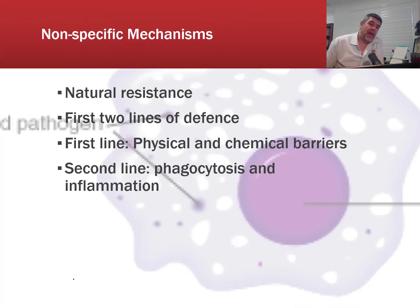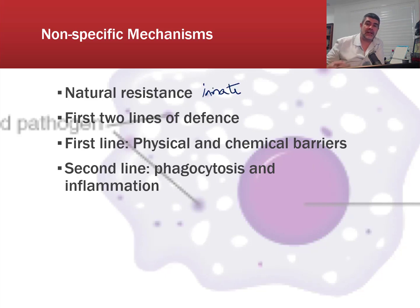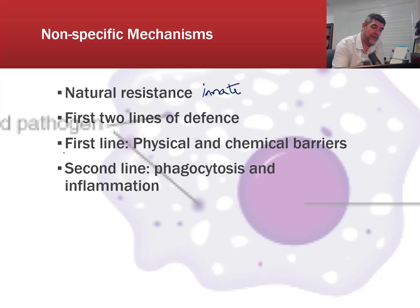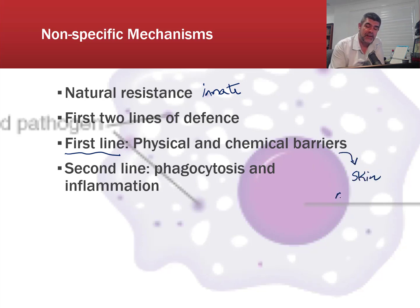Nonspecific mechanisms are our natural or innate resistance. They're not ones that we develop over time — they're ones that we're naturally born with, and they consist of two primary lines of defence. In the first line, we have physical and chemical barriers, which includes things like the skin and the mucous membranes. This will be the focus of the first half of this split video.